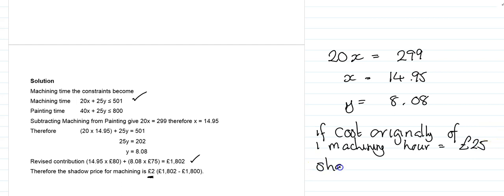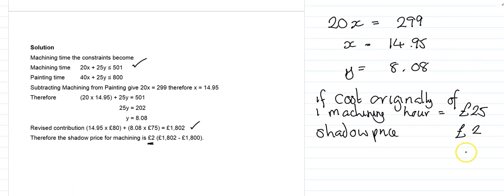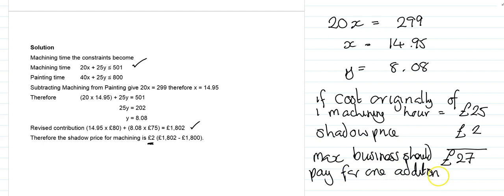Add on the shadow price of £2, and that will give us a new cost of £27. That will be the maximum the business should pay for one additional hour: the original cost of £25 plus the shadow price.